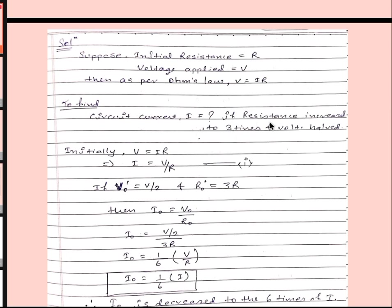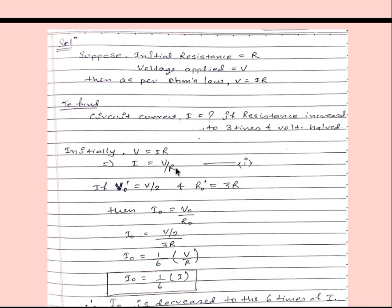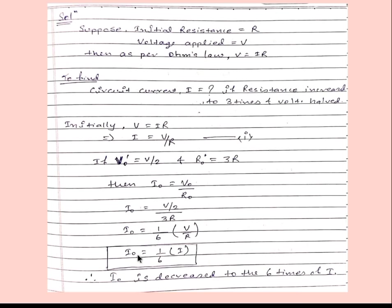The condition is: resistance increased to three times and voltage halved. Initially V is equal to IR, so I is equal to V divided by R. Now the new voltage V₀ is equal to V divided by 2, and R₀ is equal to three times the initial R. Therefore I₀ is equal to V₀ divided by R₀. Putting in the values, I₀ is equal to one-sixth of the initial current I. Therefore the current is decreased to one-sixth of the initial current.